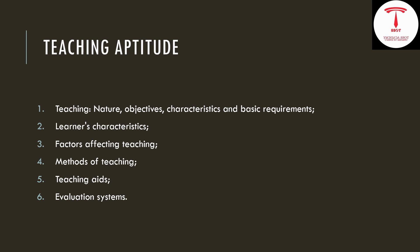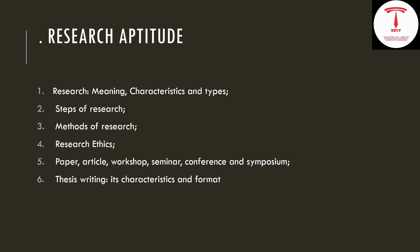This is the most important thing about teaching aptitudes — teaching nature, objectives, characteristics, and basic requirements. This is the main topic of research and types. Steps of Research, Methods of Research, Research Ethics, Paper, Articles, Workshop, Seminar, Conference and Symposium. This is the thesis writing.